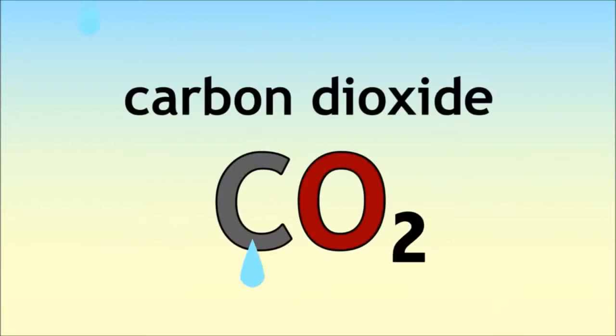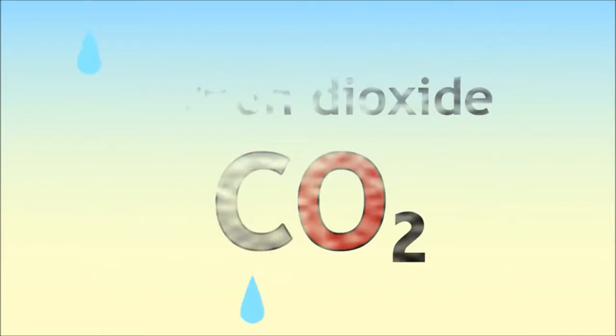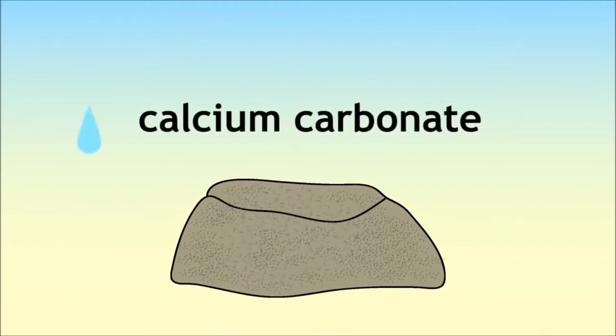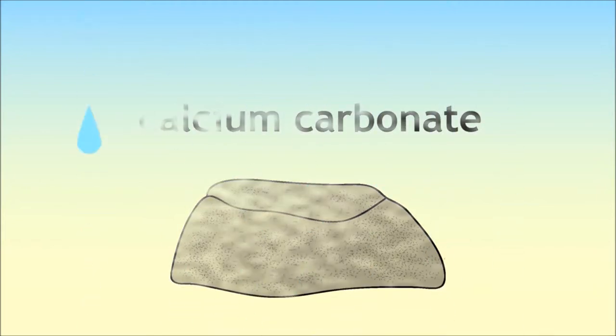However gases from the air can dissolve in rainwater and one of these is dissolved carbon dioxide. When rainwater falls on limestone, that's calcium carbonate, the limestone dissolves slowly, which is how the great caves full of stalactites are formed.